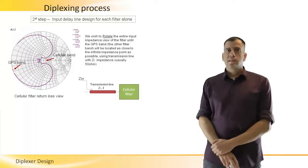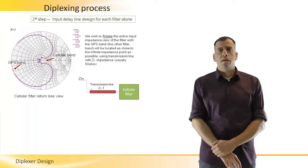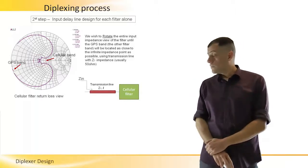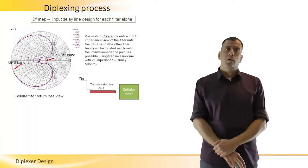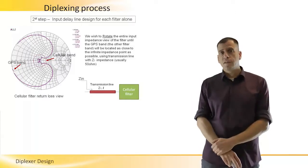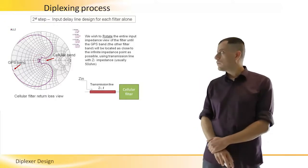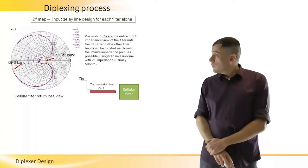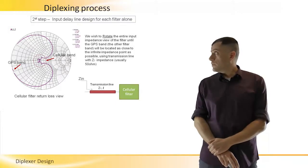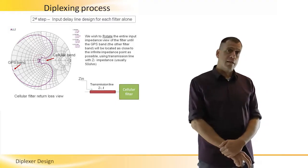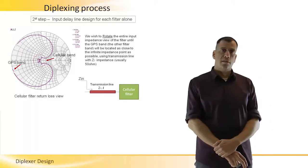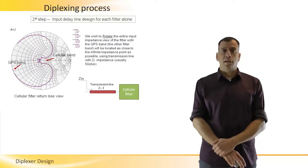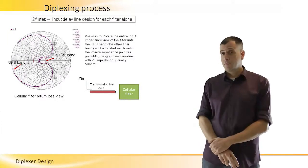I start by marking both the cellular band and the GPS band on the reflection view. We see that the passband is 50 ohm, around 50 ohm, and the stop band in this case is slightly capacitive near zero. Now I wish to rotate the Smith chart view until the markers of the GPS band that indicate the frequencies of the GPS band will be located as close to the infinite point, to the open circuit point on the right side of the Smith chart. And that, of course, I do as close as possible. How I do it? I do it using a transmission line as explained before, previously.